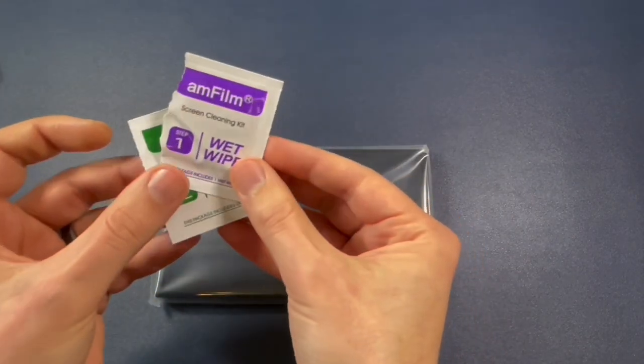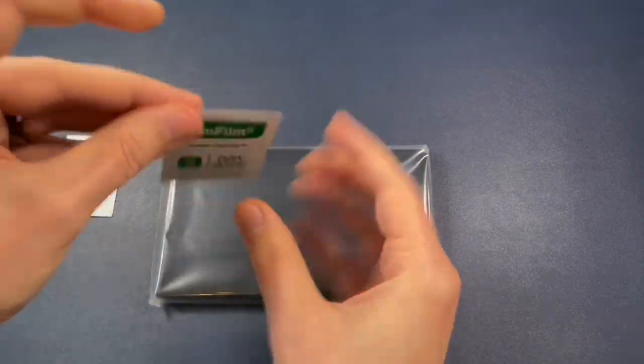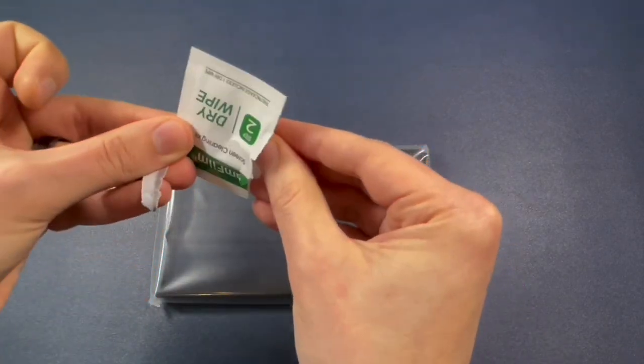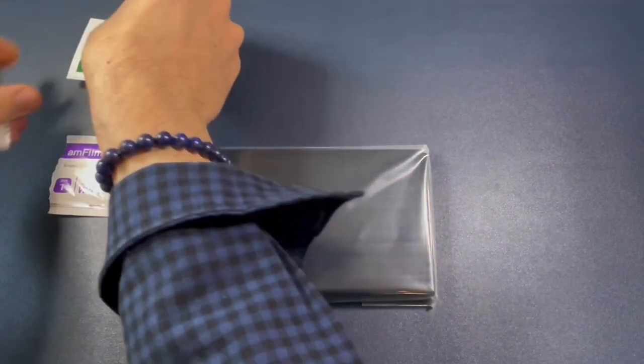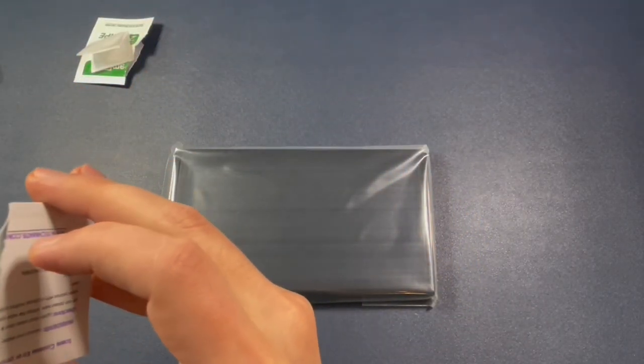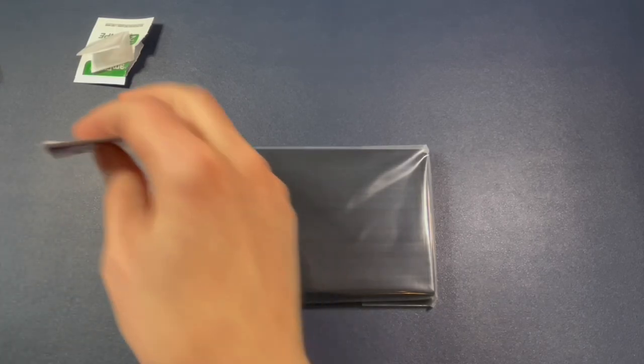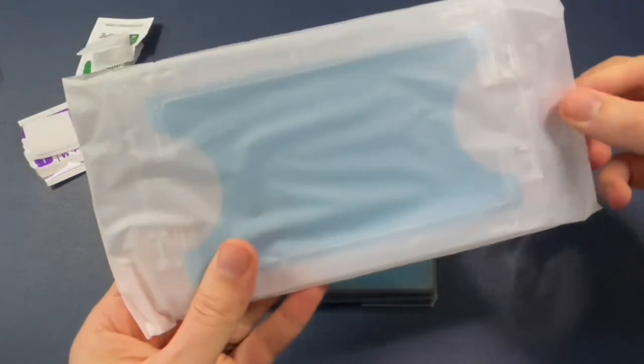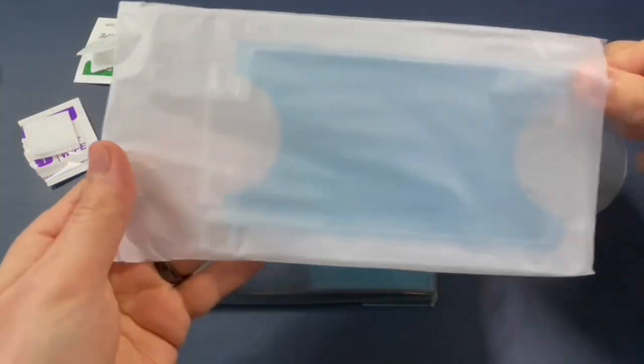So what I recommend is opening up your wet wipe and dry wipe packages first so that they're ready to go. The longer you take to do these steps, the more dust is going to accumulate on your Nintendo Switch screen. And you don't want dust. That's the whole point of this. You want it dust free. And we're going to get this baby dust free.